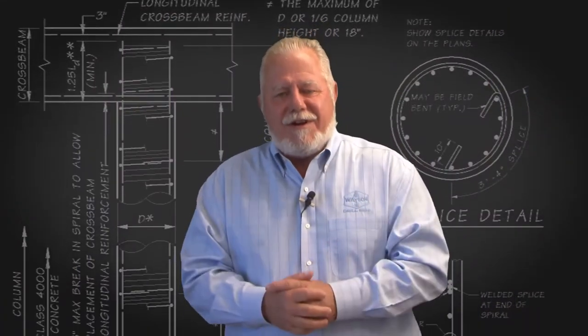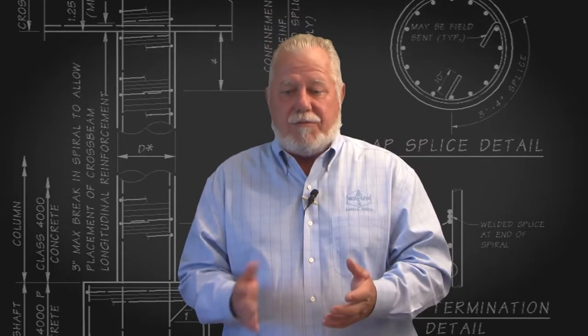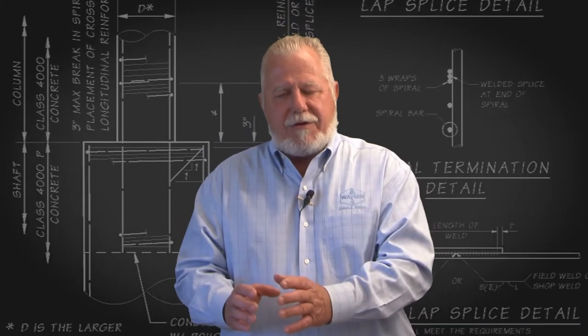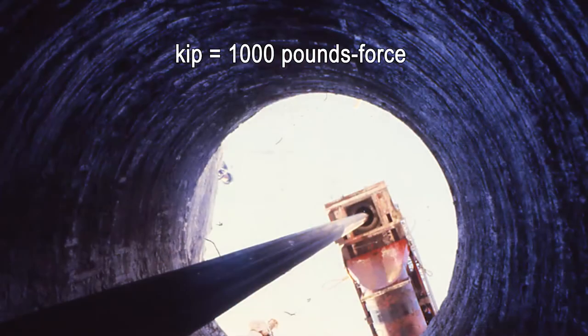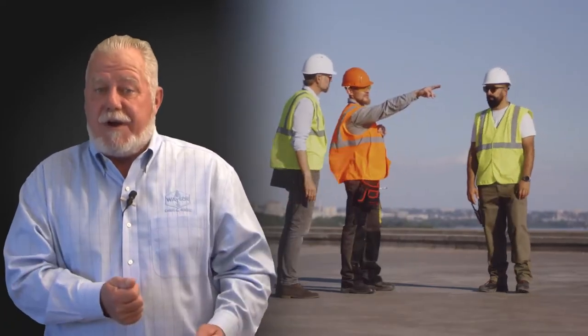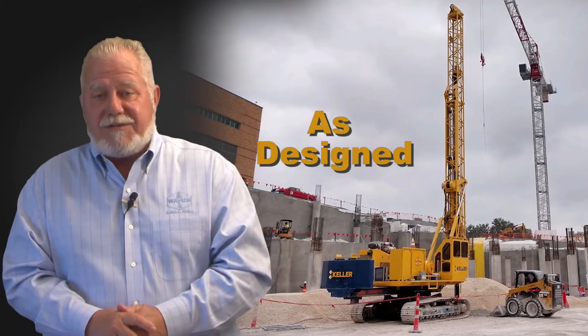The structural engineer meets with the architect to determine the column loading requirement of that structure — whether it's a single level, double level, or a bridge construction, it has a weight and a mass to it. The structural engineer determines what that weight is and converts it to column loading, specifying what diameter and depth those drilled shafts need to be. Column loading is calculated in KIPS in the industry. Once the drilled shaft design is implemented, it's given to the general contractor, who hires a driller to go out and execute the project as designed.